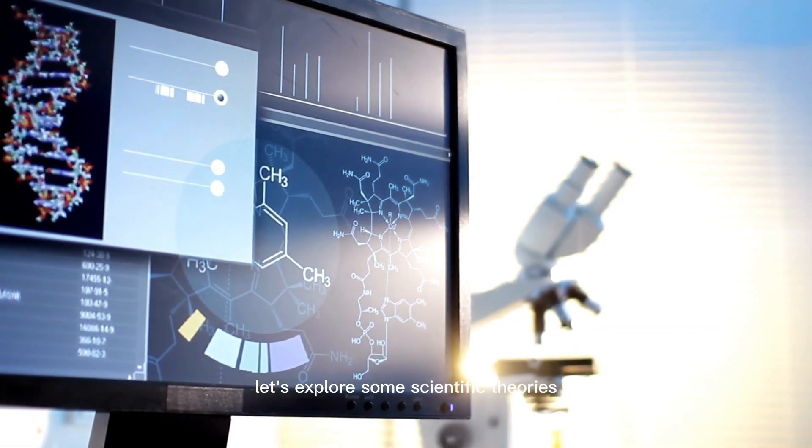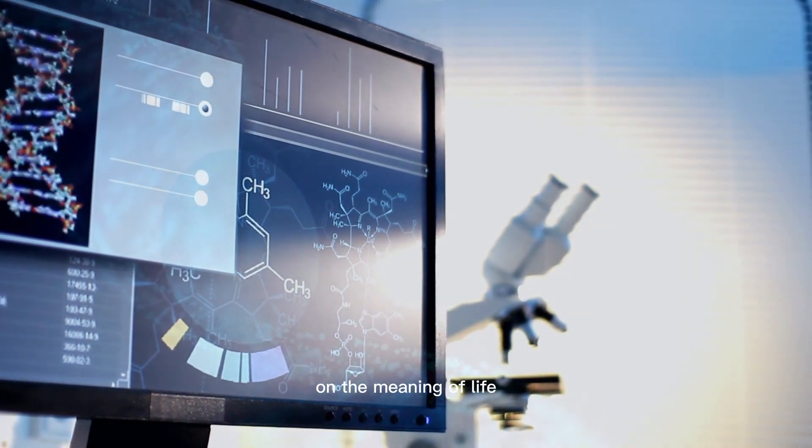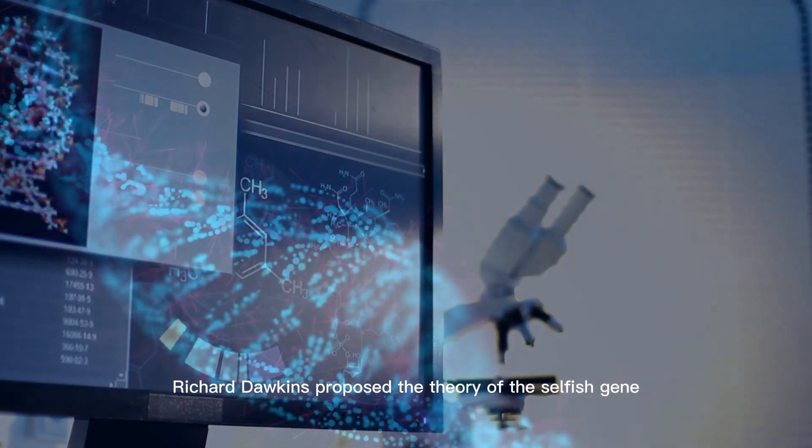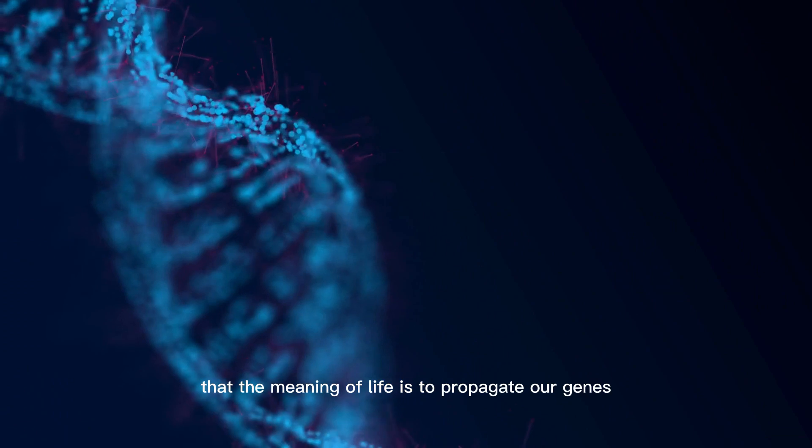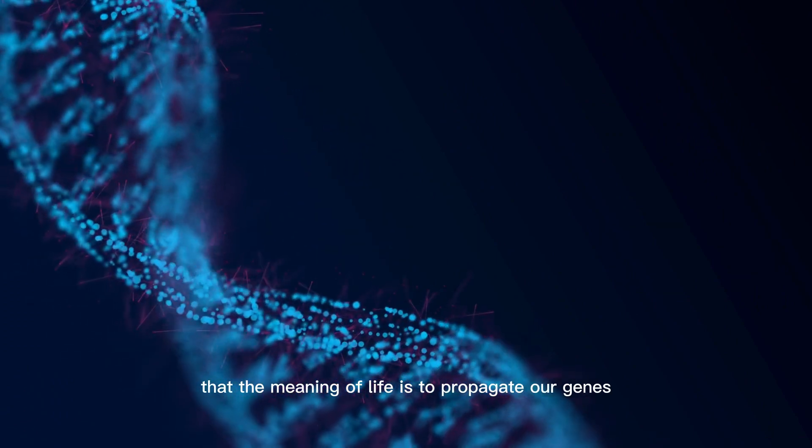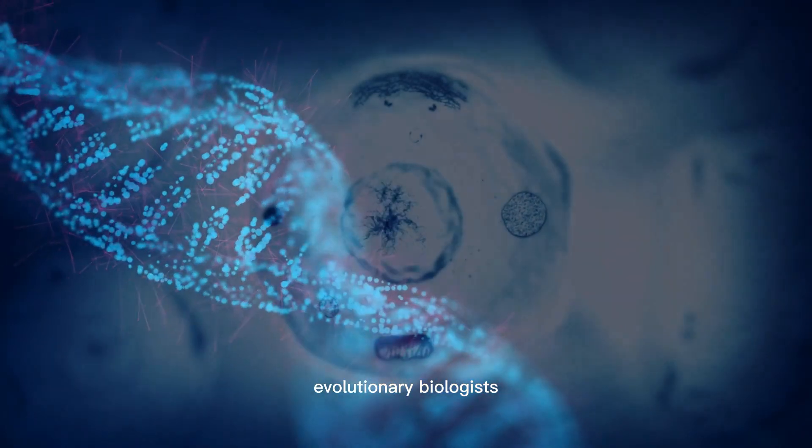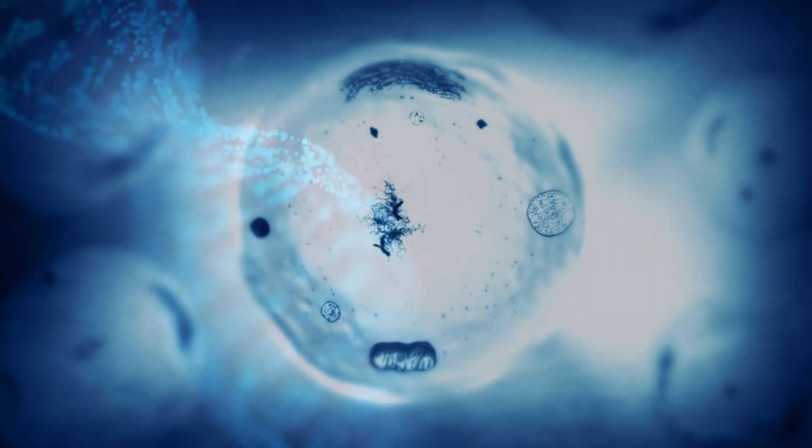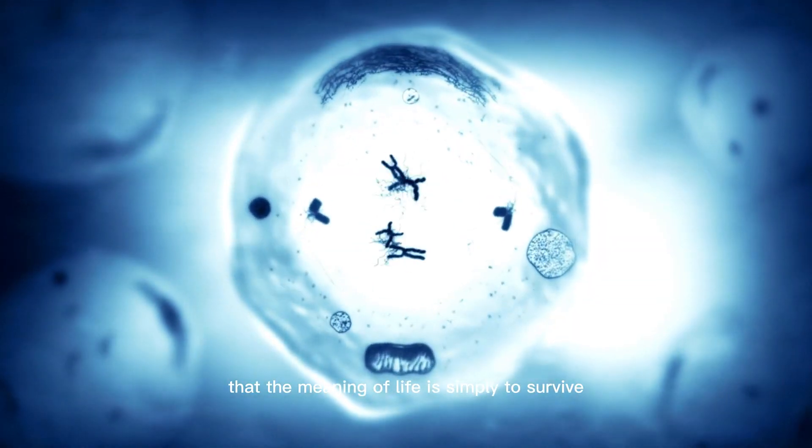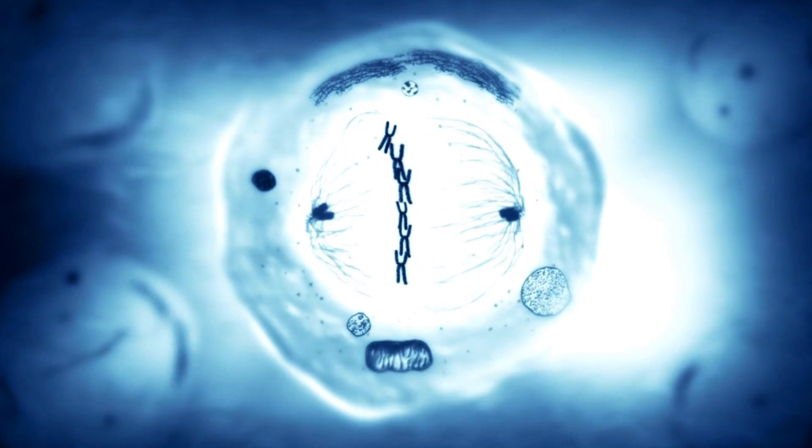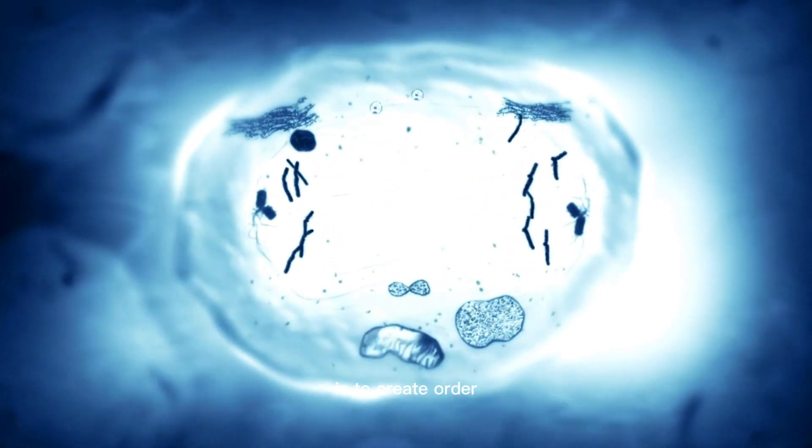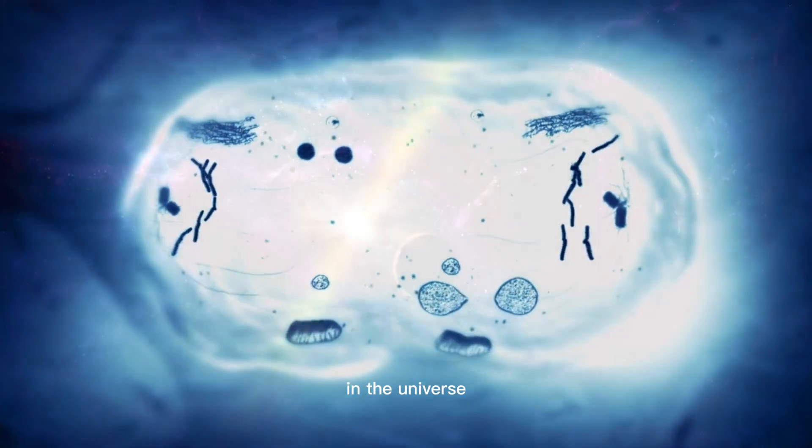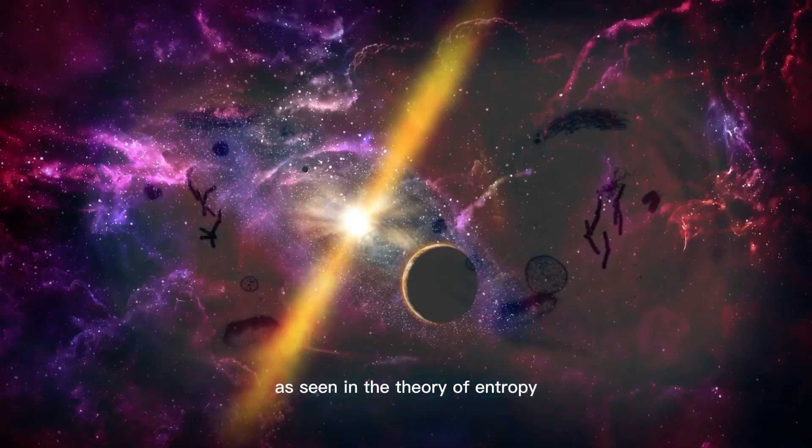Let's explore some scientific theories on the meaning of life. Richard Dawkins proposed the theory of the selfish gene, which suggests that the meaning of life is to propagate our genes and ensure their survival. Evolutionary biologists also suggest that the meaning of life is simply to survive and reproduce. Some scientists propose that the purpose of life is to create order and complexity in the universe, as seen in the theory of entropy.